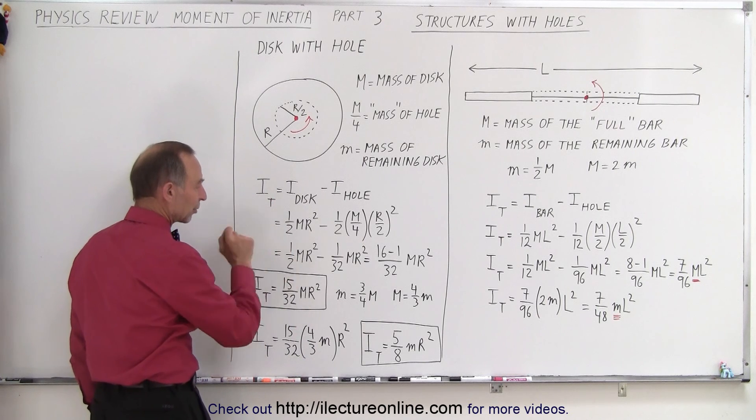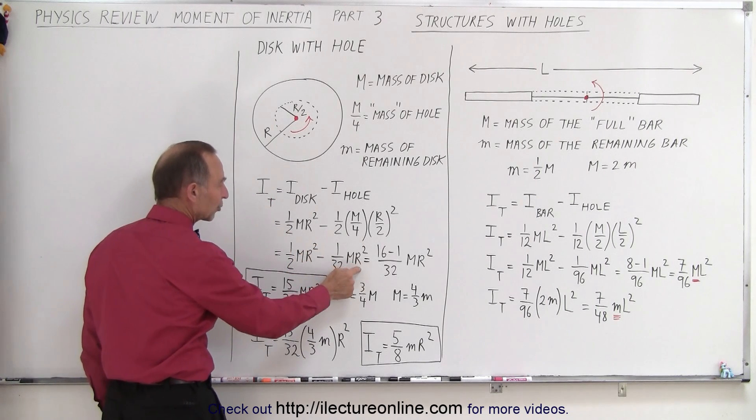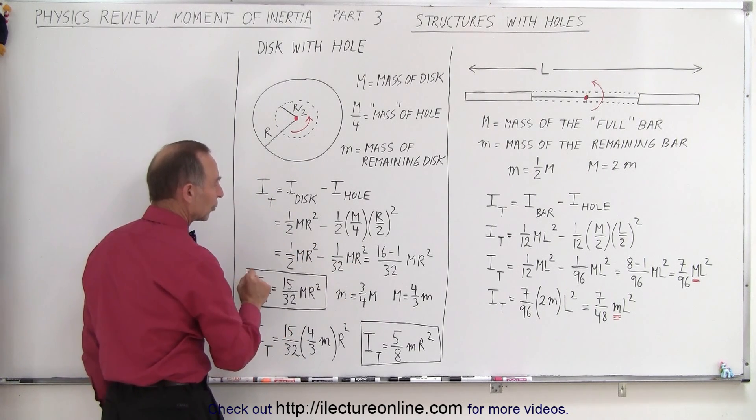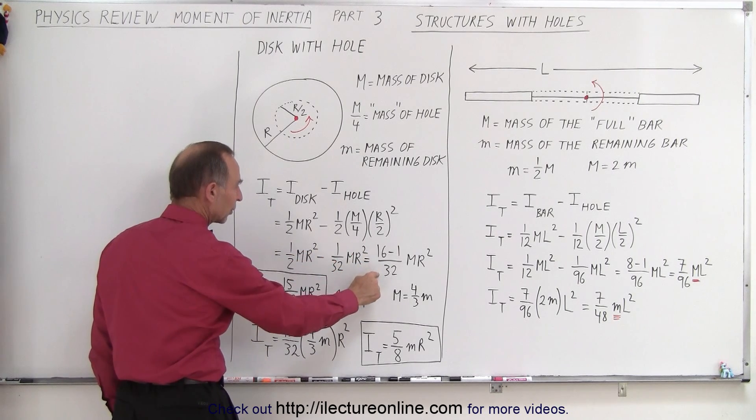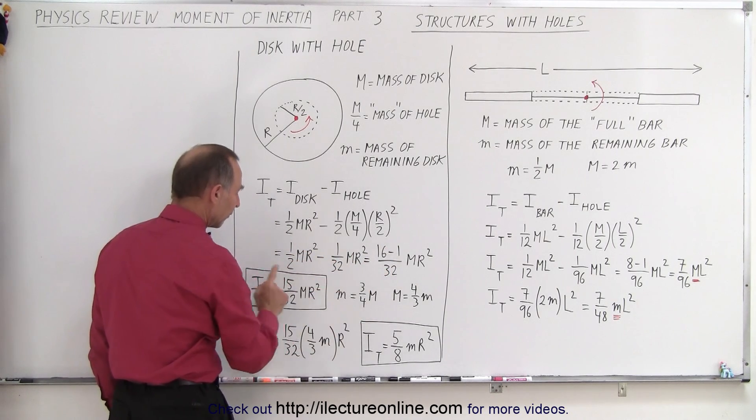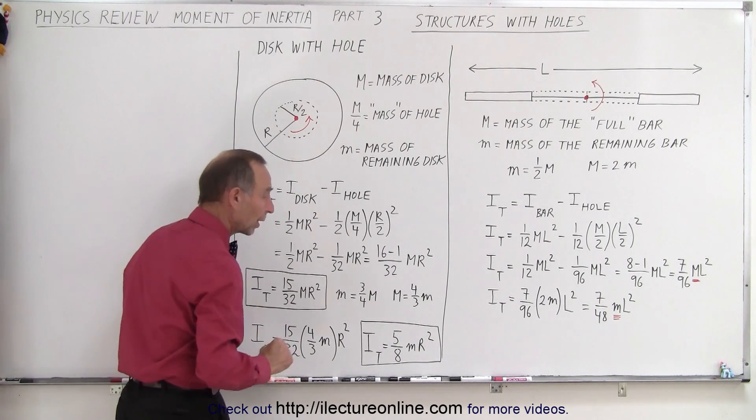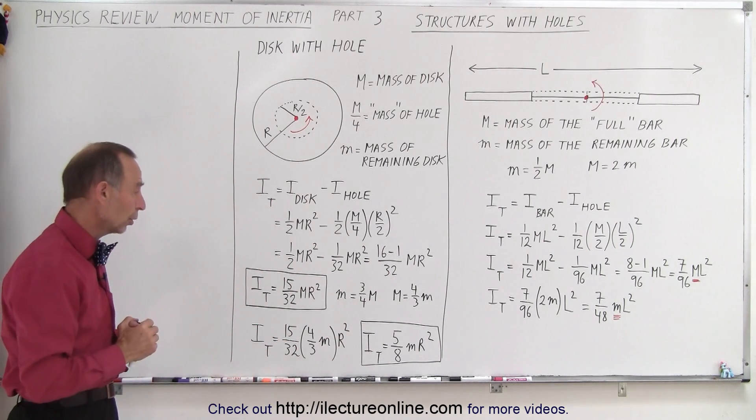When we work that out, we get 1/2 MR squared minus 1/32 MR squared. The common denominator is 32, so we get 16/32 minus 1/32, or 15/32 MR squared, M again being the mass of the whole disk without the hole.